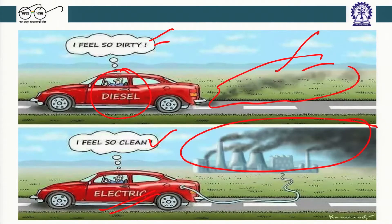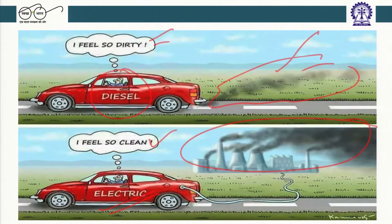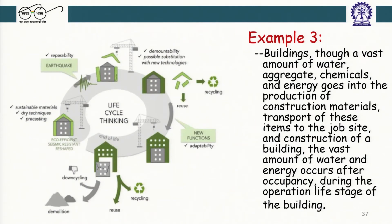It is problem shifting, not problem solving. Electric cars also require batteries, which use a lot of rare earth metals — they are called rare because they are rare. Mining these rare metals creates a bigger environmental footprint. Those are the issues you need to look into: when you try to solve environmental problems, it should be problem solving, not problem shifting.